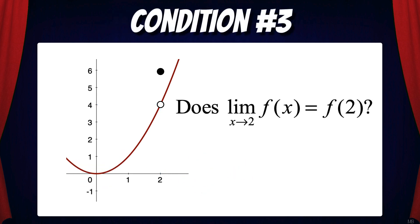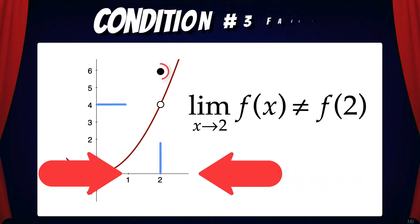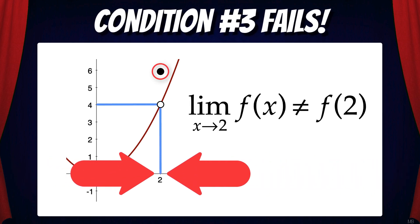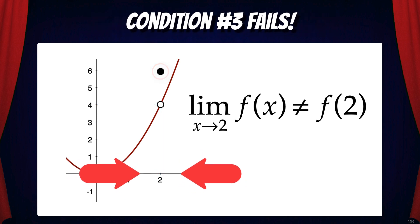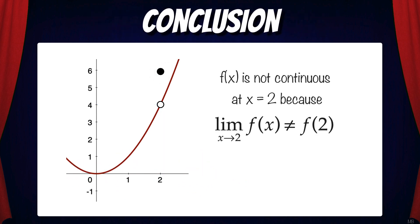Condition 3: does the limit of f(x) as x goes to 2 equal f(2)? No, they're different. That means this function is not continuous at x equals 2. So we can write our conclusion: f is not continuous at x equals 2 because the limit of f(x) as x goes to 2 does not equal f(2).